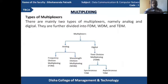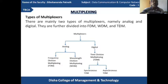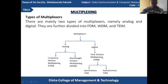The current section is about the types of multiplexing. There are mainly two types: analog and digital. Analog multiplexing is divided into FDM (Frequency Division Multiplexing) and WDM (Wavelength Division Multiplexing). Digital multiplexing is divided into TDM (Time Division Multiplexing), which is further divided into synchronous TDM and asynchronous TDM.